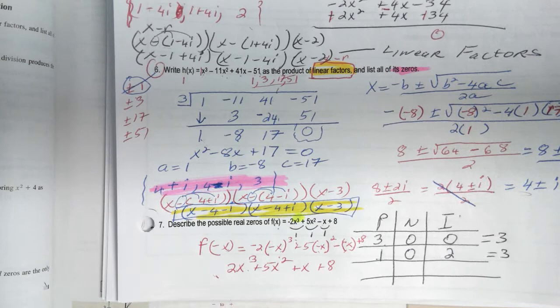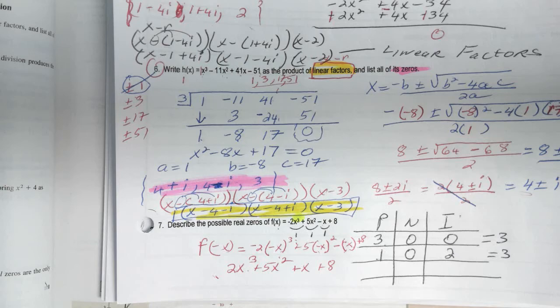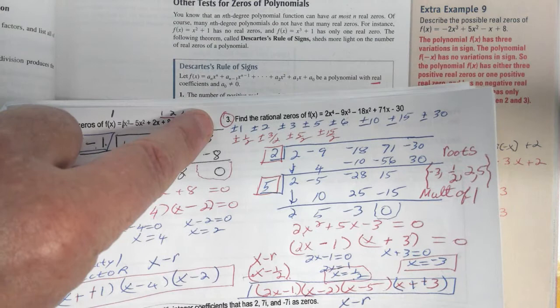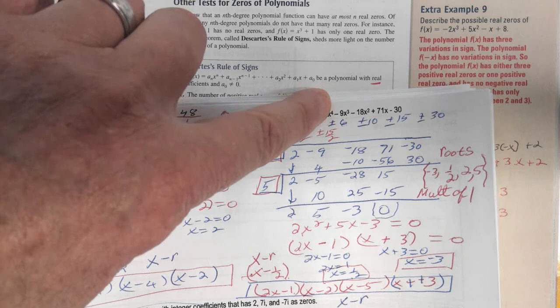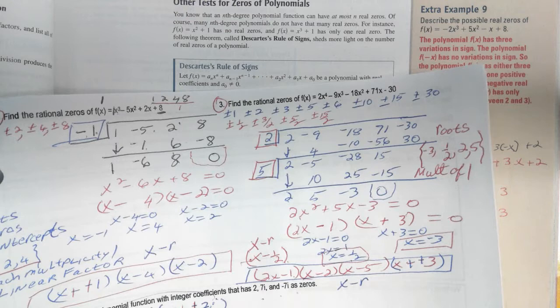That's called Descartes' Rule of Signs. You can use that whenever you do a math problem. So if you're doing problem number one or three, that's a four degree equation — you could do a PNI chart there. Let's just do one so we can make sure we know what we're doing.